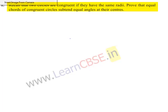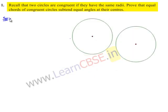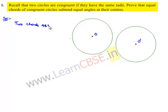Now moving on to the solution. Let us consider two congruent circles as shown in the figure. Let the center of one circle be O and the other be O'. We know that the radii of the two circles will be equal. Let us consider two chords AB and CD of equal length in the two circles.